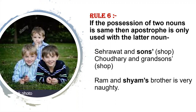Rule number 6: If the possession of two nouns is the same thing, then apostrophe S is used only with the later noun. If two people share one possession, then apostrophe is only placed with the last noun. For example, 'Sherawad and son's shop' — both Sherawad and son share the same possession, so we put apostrophe S with the last one. Similarly, 'Ram and Sham's brother is very naughty' — both share the same thing, so we put apostrophe S on the last one only.